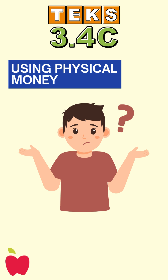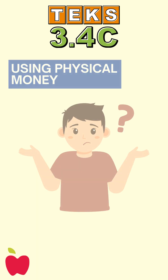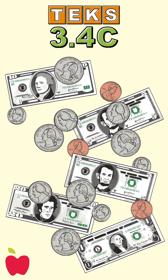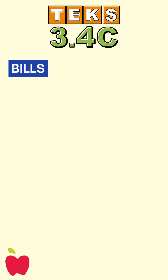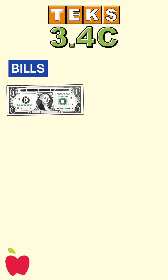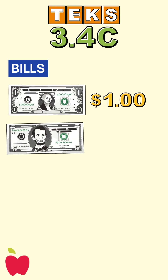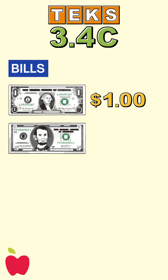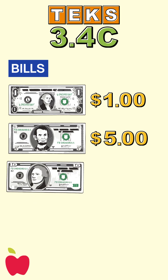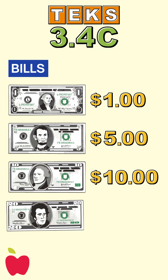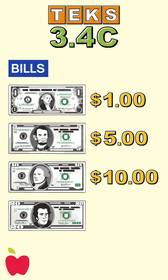Before we get started with examples, let's take a look at the value of some common bills and coins. Let's start with the bills. A $1 bill is worth $1. A $5 bill is worth $5. A $10 bill is worth $10. And a $20 bill is worth $20.